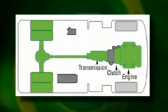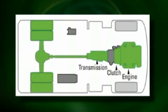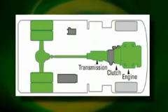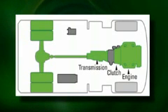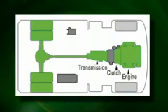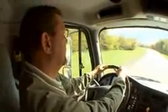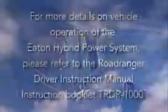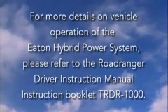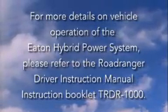The conventional mode of operation is rare and only occurs when the high voltage batteries have a low charge, when driver demand is high, or when there is a fault in the hybrid system. When in the conventional mode, only the engine is supplying torque to drive the rear wheels. The diesel engine revs and the clutch engages, allowing torque to transfer from the engine's flywheel to the input shaft. For more details on vehicle operation of the Eaton Hybrid Power System, please refer to the Road Ranger Driver Instruction Manual.